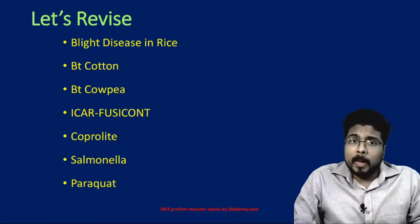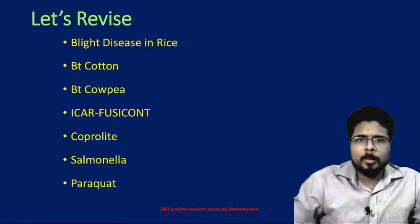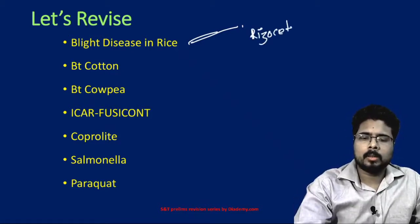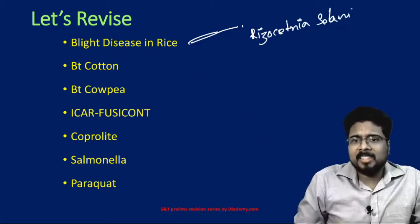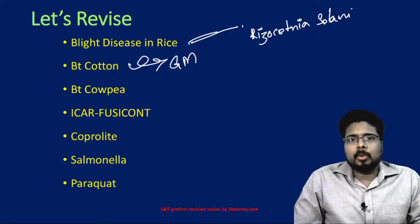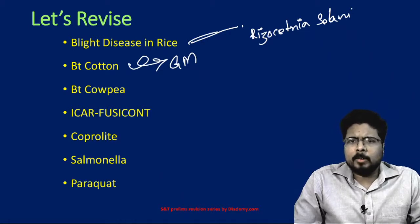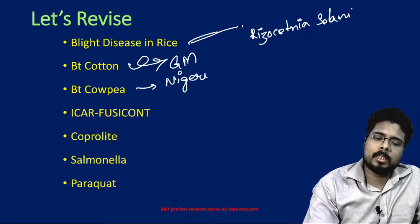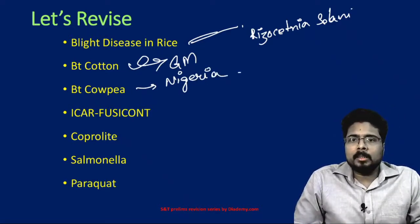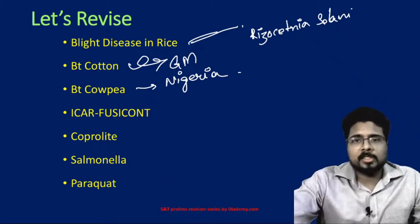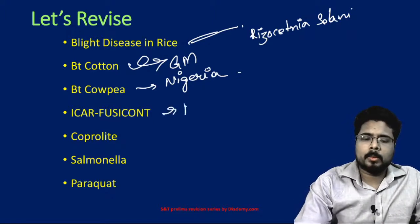Let's review what we have studied. Blight disease in rice is caused by the fungal strain Rhizoctonia solani, which also affects potatoes. BT cotton is the only genetically modified crop accepted in India, approved by the Minister of Environment, Forest and Climate Change back in 2002 — it produces a toxic protein for the pink bollworm. Nigeria became the first country to accept BT cowpea, a genetically modified cowpea. ICAR launched Fusicont, a pesticide to control Panama wilt.